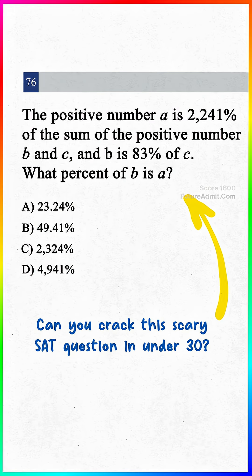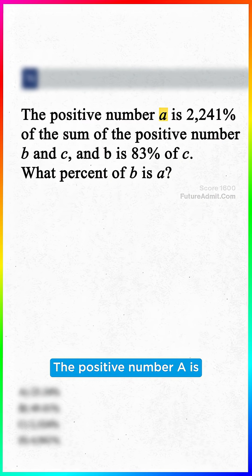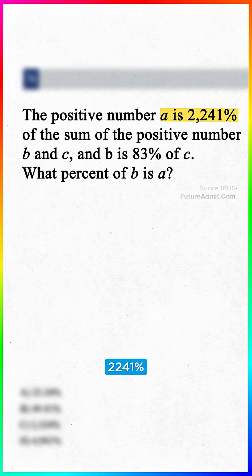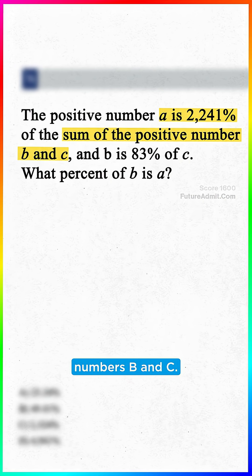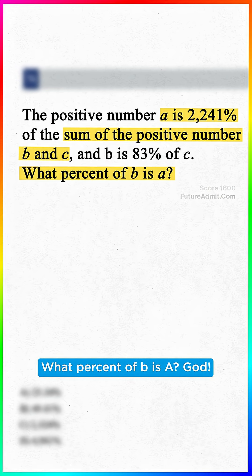Can you crack this scary SAT question in under 30 seconds? The positive number A is 2,241% of the sum of the positive numbers B and C, and B is 83% of C. What percent of B is A?